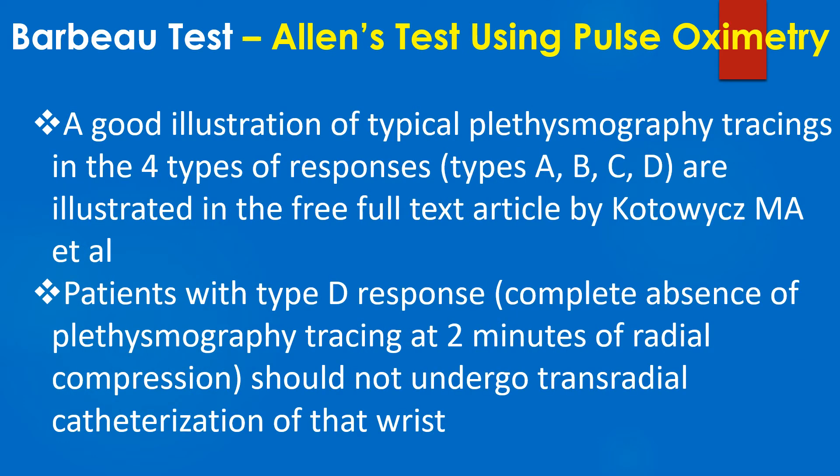A good illustration of typical plethysmography tracings in the four types of responses — Type A, B, C, and D — is available in the free full-text article by Kotovics, May, and associates. Patients with a Type D response, showing complete absence of plethysmography tracing at 2 minutes of radial compression, should not undergo trans-radial catheterization of that wrist.